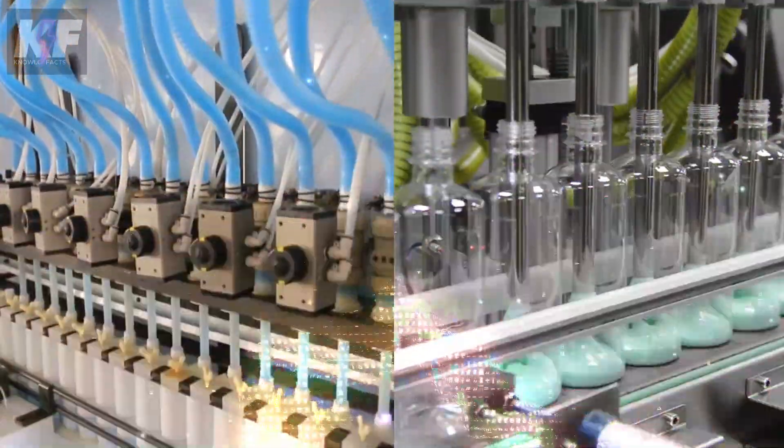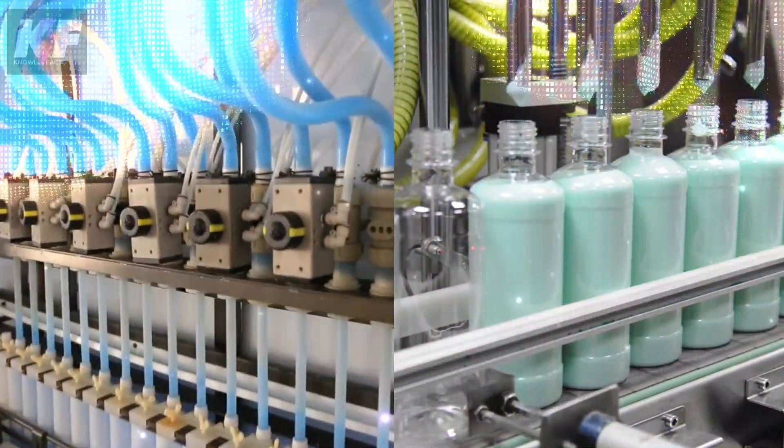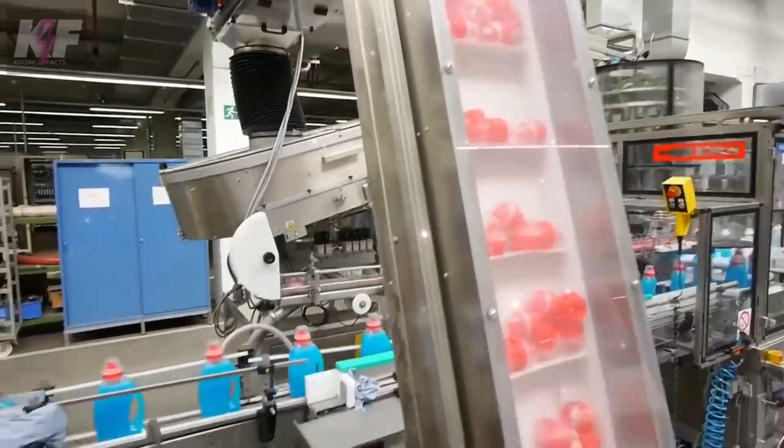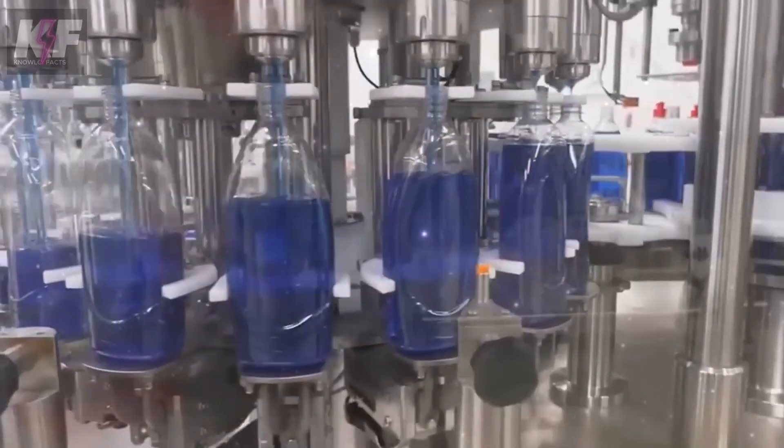The detergent solution is transported from the storage tanks to the packaging lines, where it is filled into the previously prepared containers. Precise control of the volume of detergent poured into each container is carried out to ensure compliance with the established specifications and measurements.